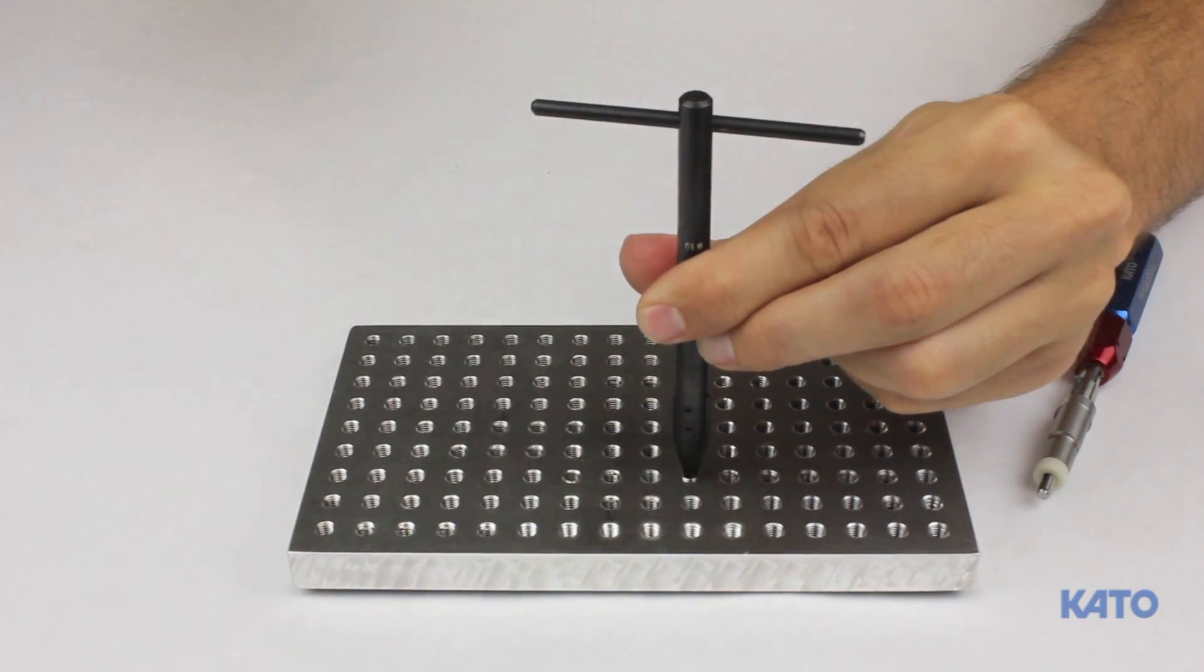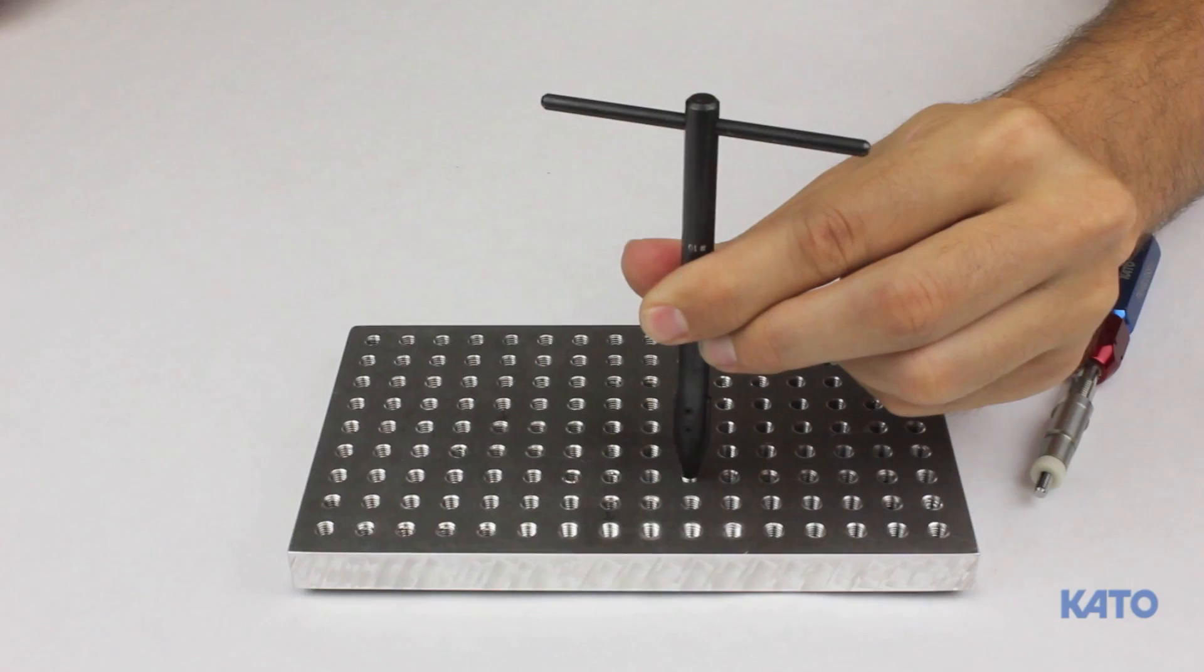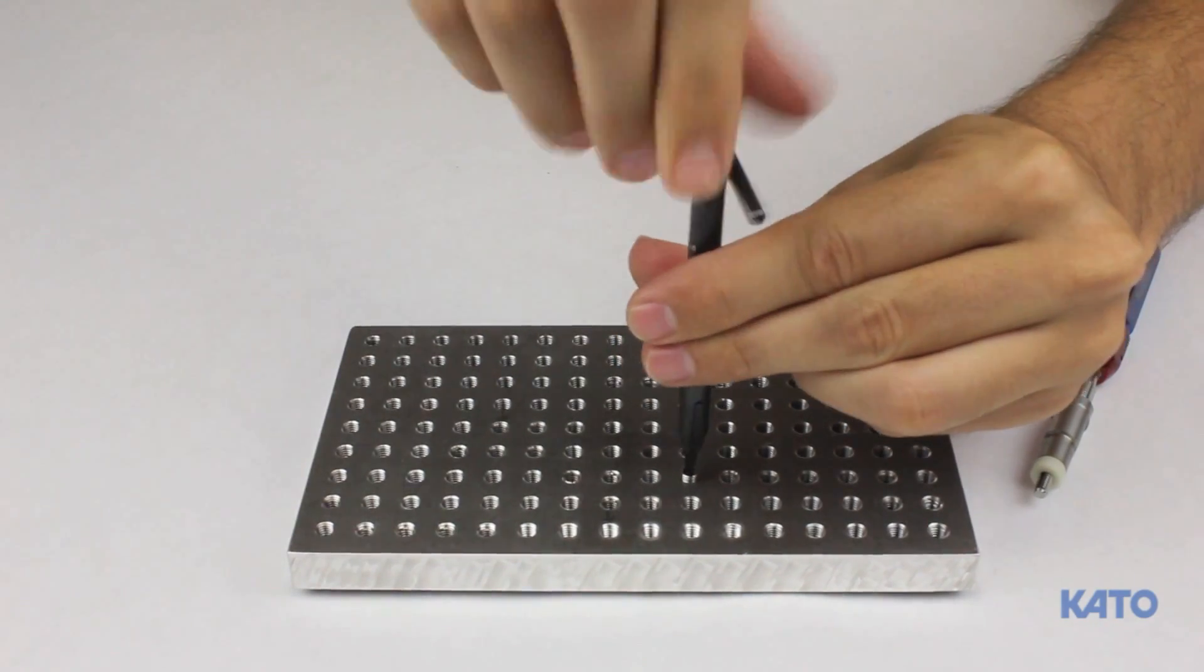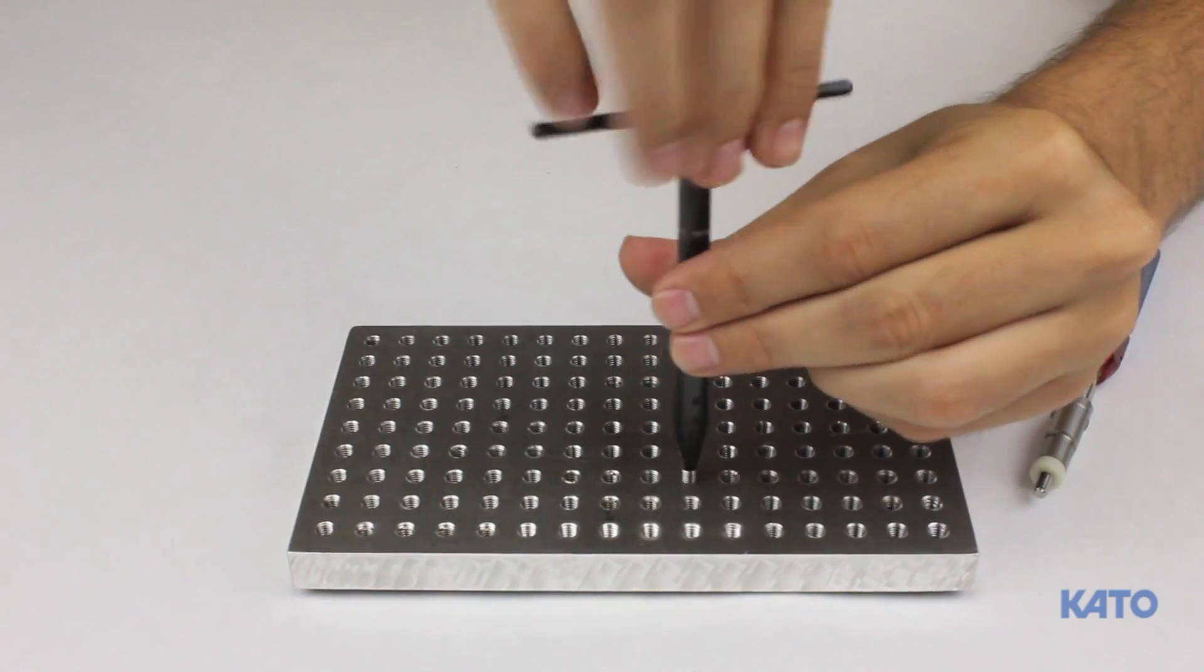It may be necessary to tap the tool with a hammer in order to get the blade to wedge into the insert. Continue turning counterclockwise until the insert is extracted from the hole.